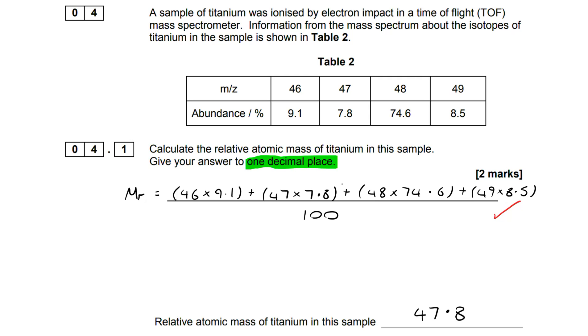Once I put those in, I get my final answer of 47.8. I've answered to one decimal place, which is what the question requested. A mass spectrum calculation will always be to one decimal place, but it is about reading the question carefully.